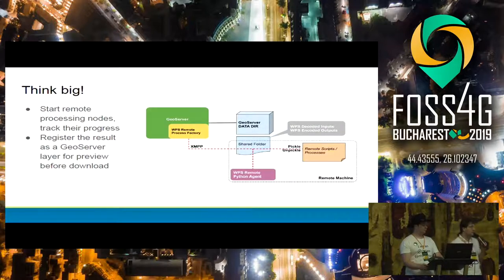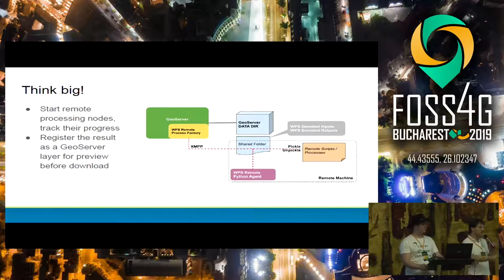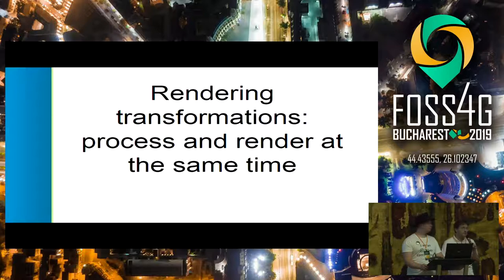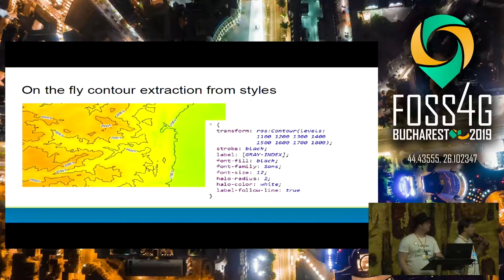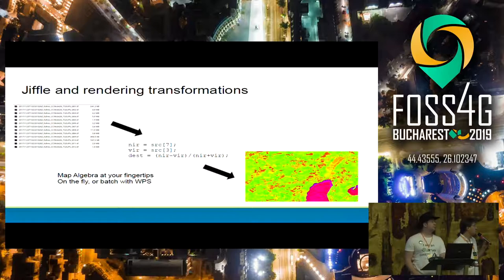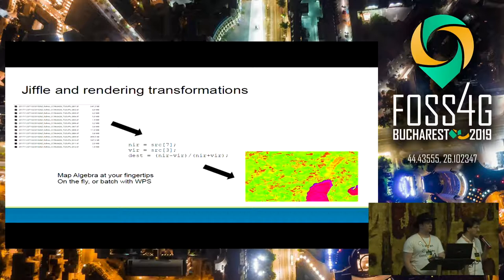We also use WPS to build map animations. We can go big and use GeoServer as a frontend for a computational grid with tens of servers doing backend processing. The integration goes further with rendering transformations — the notion of processing and rendering at the same time. For example, from a digital elevation model you can extract contour lines on the fly using a CSS style. We can also do map algebra on the fly using JIFO, such as extracting an NDVI index out of a 12-band Sentinel-2 raster dataset.